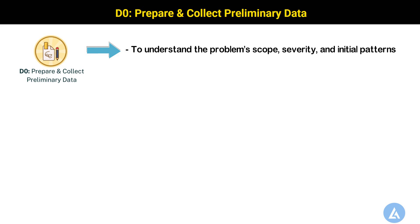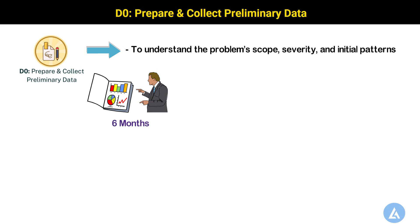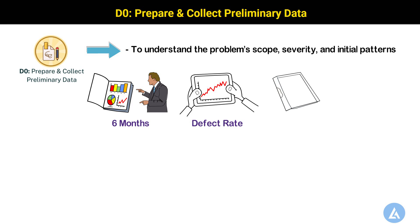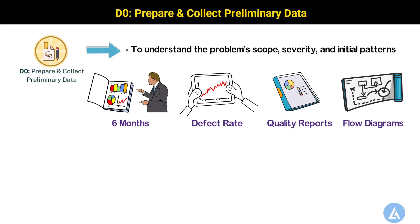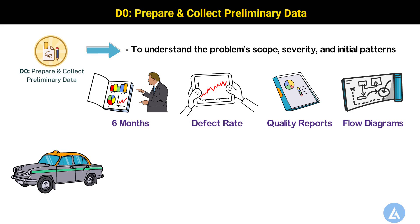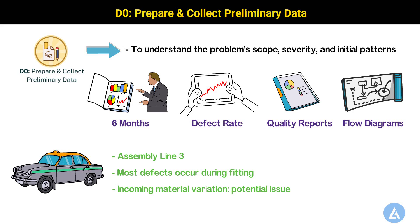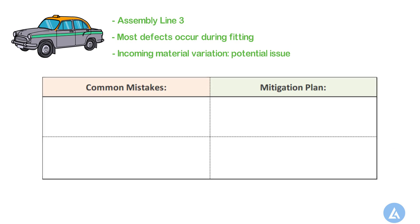How to collect this preliminary data? It can be customer complaints and defect reports from the last 6 months, production data showing the defect rate trend over time, supplier and material quality reports, as well as process flow diagrams and work instructions for assembly. Initial observations include: defects are concentrated on assembly line 3, most defects occur during fitting of engine components, and incoming material variation is suspected as a potential issue. Common mistakes during this preparation phase include rushing into problem solving without understanding baseline data, and relying on opinions instead of actual data.